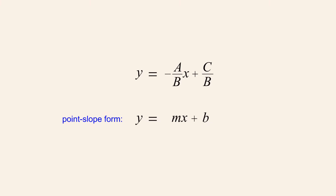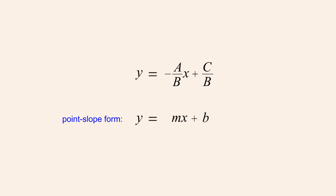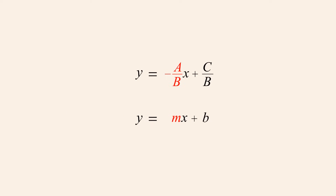Comparing these two forms, we can see that the top equation is now written in point-slope form, except instead of the constants m and b, the top equation contains constant expressions formed from combinations of the constants a, b, and c. In particular, the slope m corresponds to the constant expression negative a over b. Therefore, for linear equations written in standard form, negative a over b is the slope of the line.